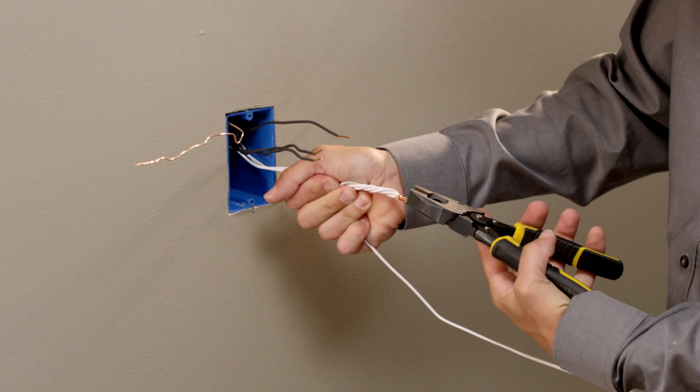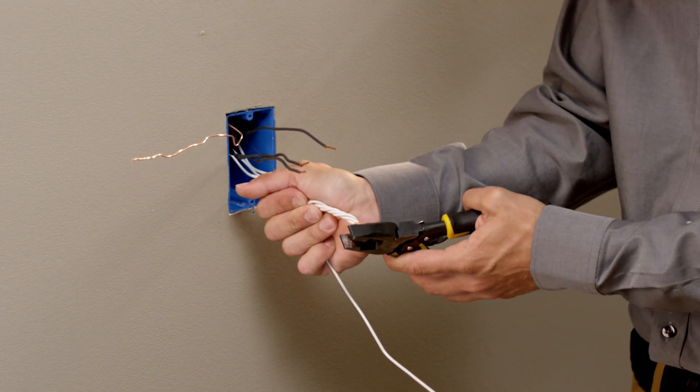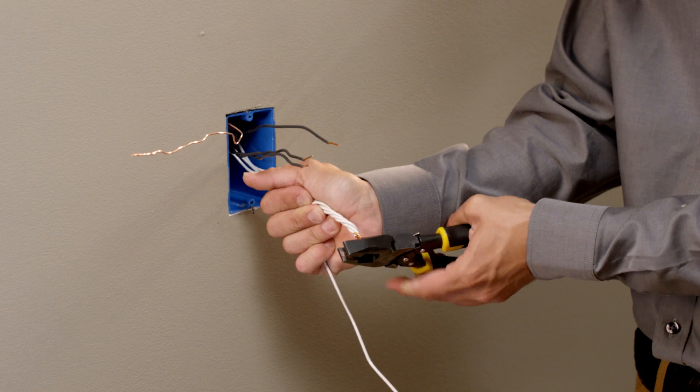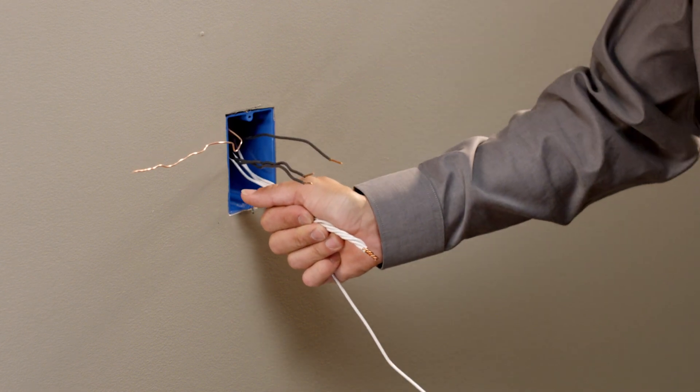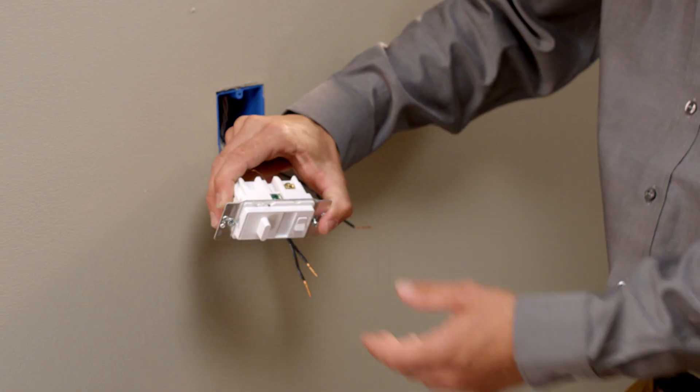You will notice that the wires are all labeled on the back of the device. Use the included wire nuts in the package, but first make sure that you use your lineman's pliers to securely wrap the stranded device wires to the solid house wires prior to tightening the wire nuts.